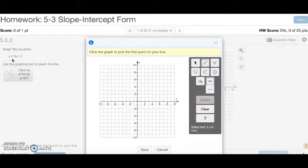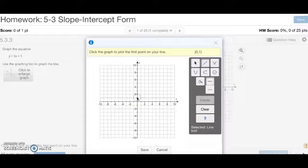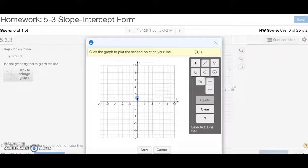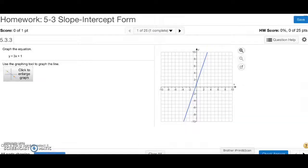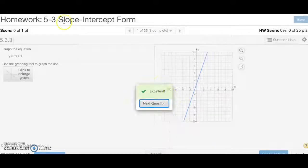We have 3 for our slope, and 1 for our y-intercept. So we start at 1 on the y-axis, and our slope is 3, or 3 over 1. So that means you go up 3, count up 3, to the right 1. And that's number 1.